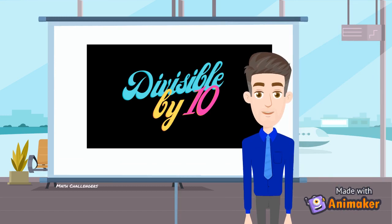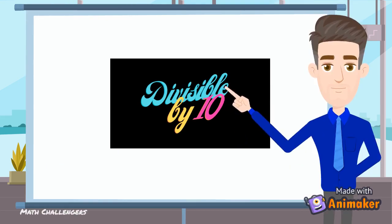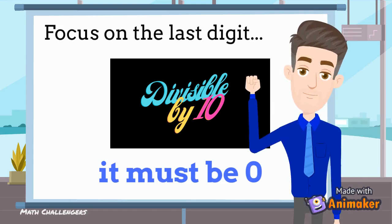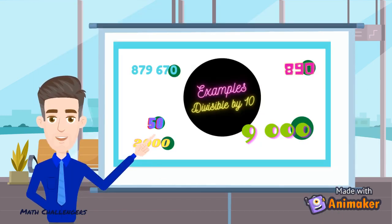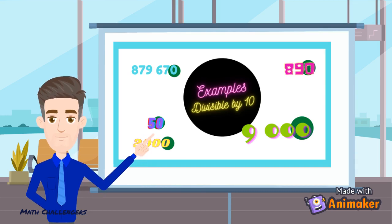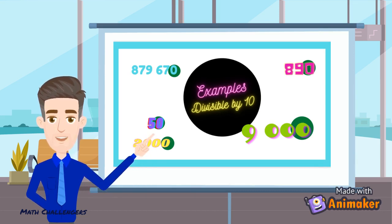Let's now have the divisibility rule for 10. A number is divisible by 10 if the last digit is 0. Examples are the following: 879,670; 890; 50; 2000; and 9000. All of these end in 0, so we can say right away that these numbers can evenly be divided by 10.